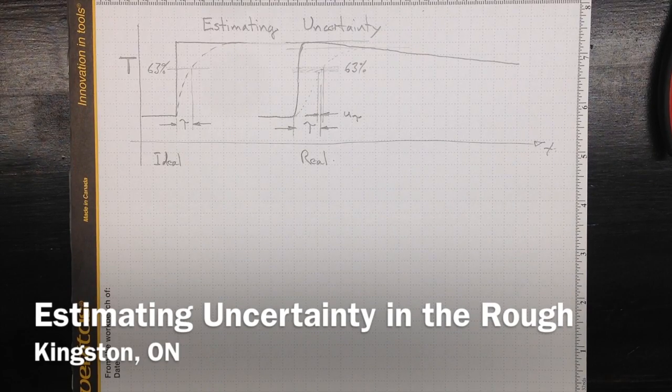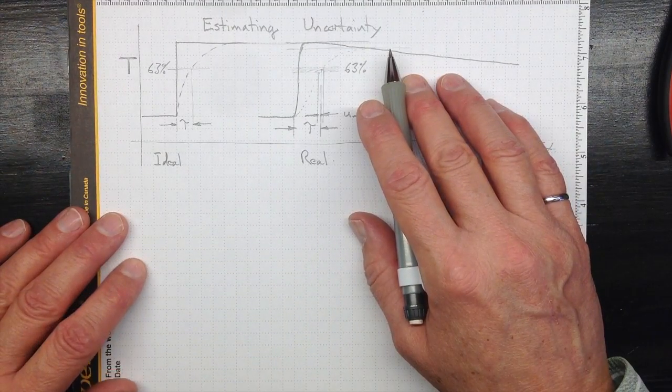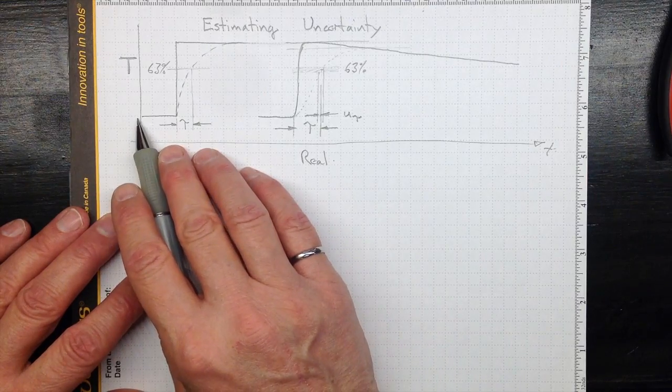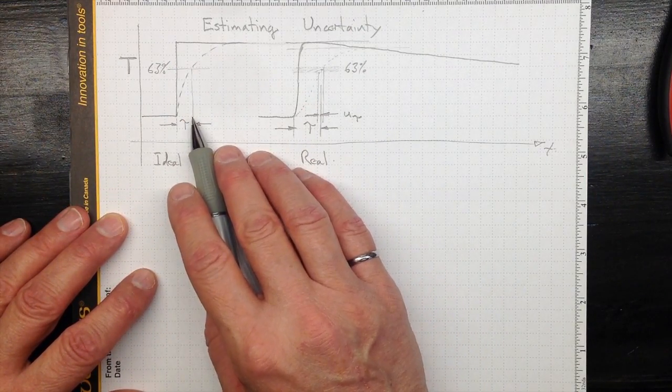Sometimes uncertainty is more of an estimate than an absolute calculation. For example, when we're looking at the temperature-time response of temperature sensors.